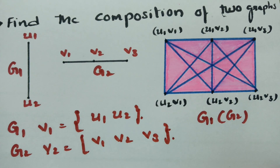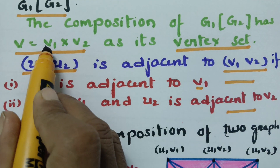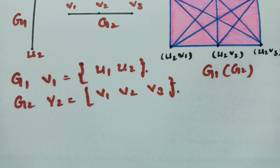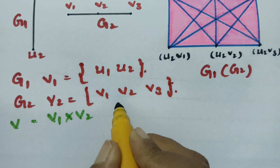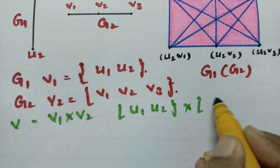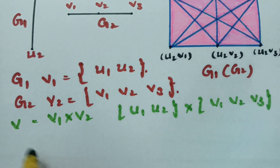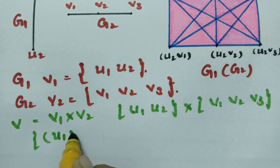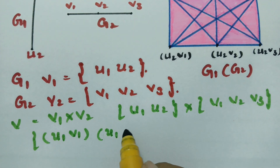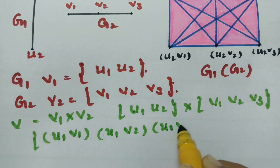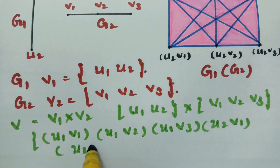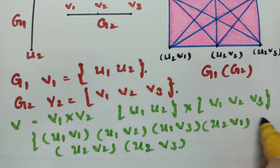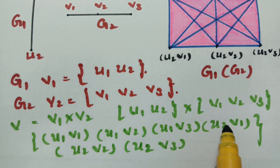To find the composition of the two graphs, the vertex set will be V1 cross V2. Making the cross product: the vertices are U1V1, U1V2, U1V3, U2V1, U2V2, and U2V3. These are the six vertices of the composition graph — points 1, 2, 3, 4, 5, and 6.